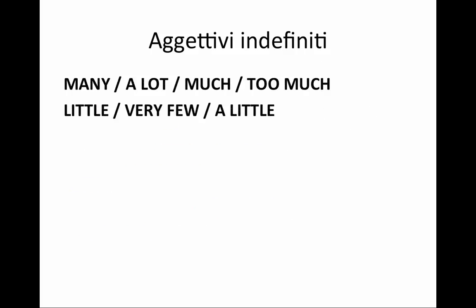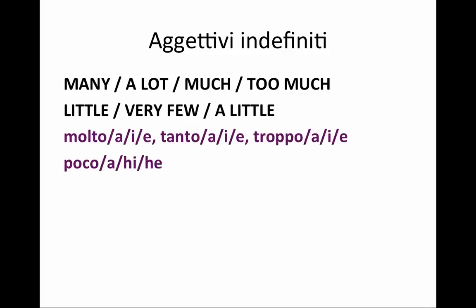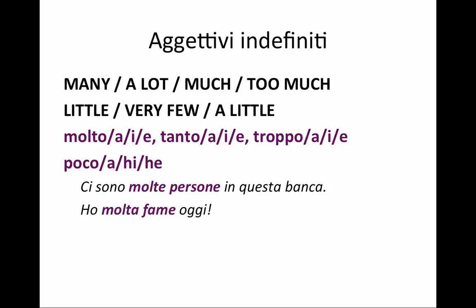Another group of indefinite adjectives indicates a large or small quantity: molto, tanto, troppo, poco. They all vary in their endings according to the noun they describe. For example, 'ci sono molte persone in questa banca' — remember, persone is always feminine in Italian whether describing men or women. 'Ho molta fame.' 'Ho prelevato pochi soldi ieri.' 'Bevo poco vino.' Remember with poco that in the plural you have to spell it with an H to keep the correct pronunciation.